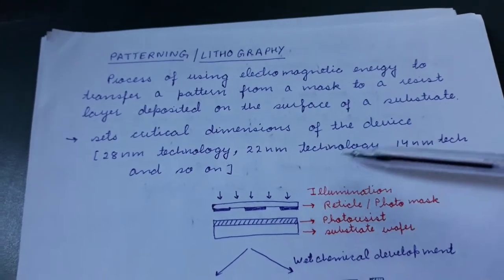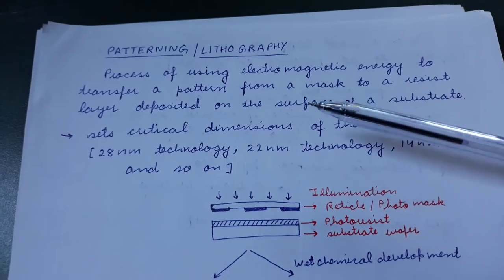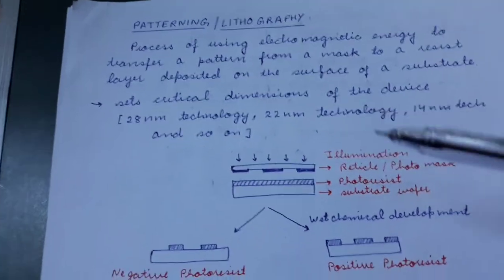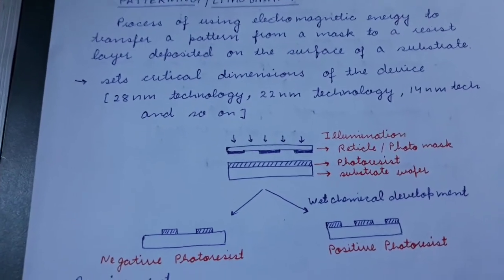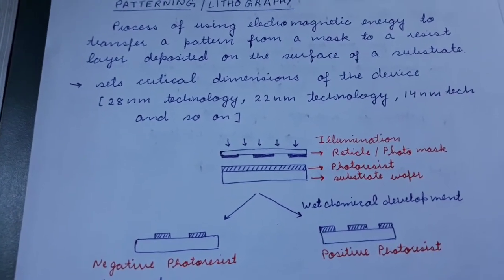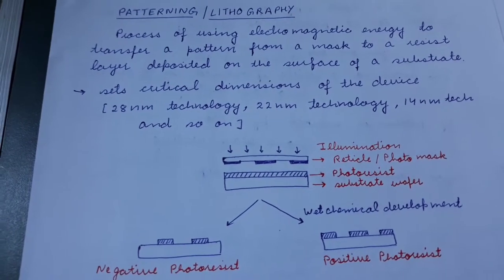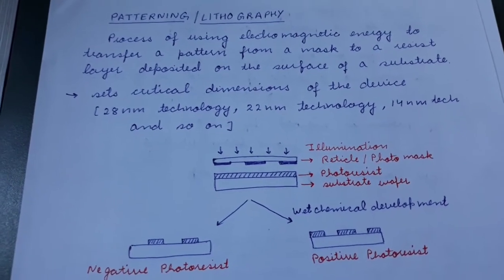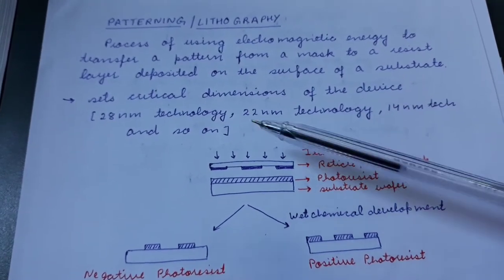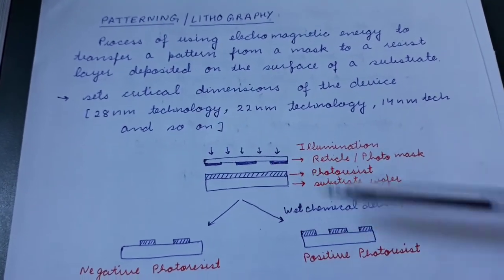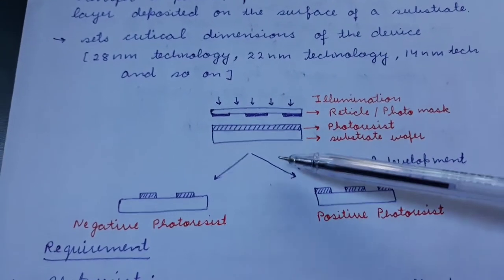Here we are discussing about photolithography. This step actually sets the critical dimension of the device. For example, if it is called 28 nanometer technology, it means that the critical dimension — the smallest dimension possible to be imprinted by that particular kind of lithography — is 28 nanometers. Then it decreased to 22, then to 14, and so on. Now it is a few nanometers.